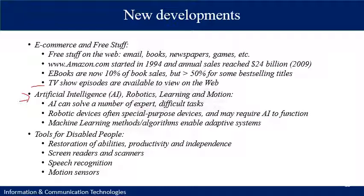There are also new developments in tools for disabled people, such as continuous health support for the restoration of abilities, productivity and independence. These include implantation of artificial limbs or other mechanical devices involving computers, such as automatic control wheelchairs. There are tools for disabled people such as screen readers for those with weakened vision, scanners, speech recognition tools, and motion sensors to help the elderly and disabled with their movement.